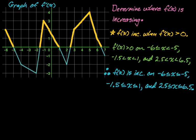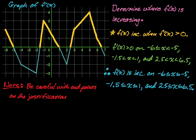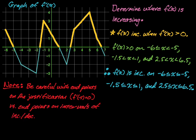If the question had been about decreasing, we just would have looked for where the derivative is negative and done the same thing. The key point: f prime of negative five equals zero, so it wouldn't be right to say f prime is greater than zero including negative five — but we do include the endpoints when stating where the function is increasing or decreasing. It's a sticky point, but you'll get used to it.